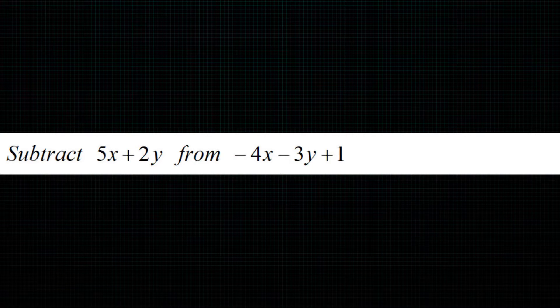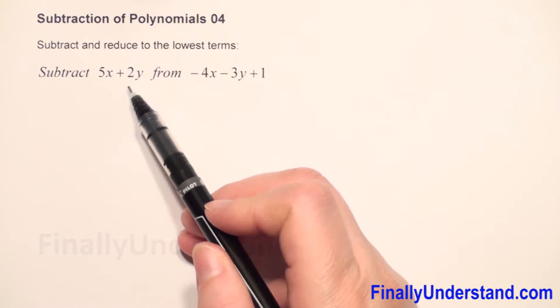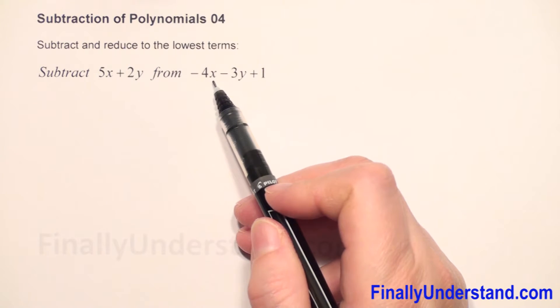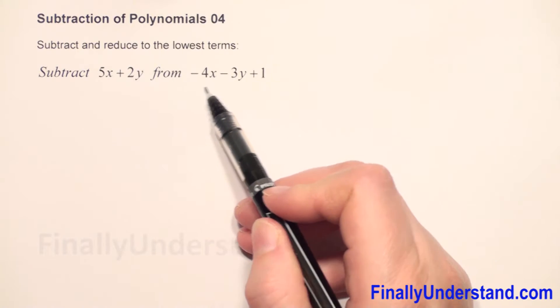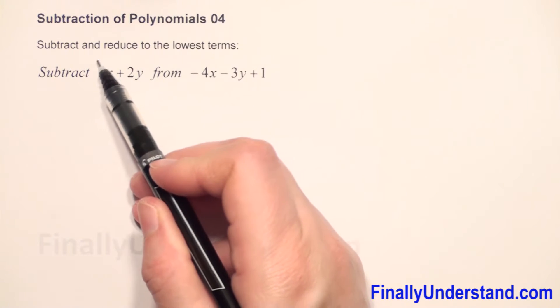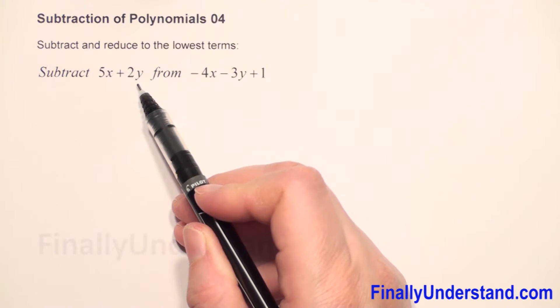We have subtraction of polynomials. We have to subtract 5x plus 2y from negative 4x minus 3y plus 1. From this polynomial we have to subtract that polynomial.